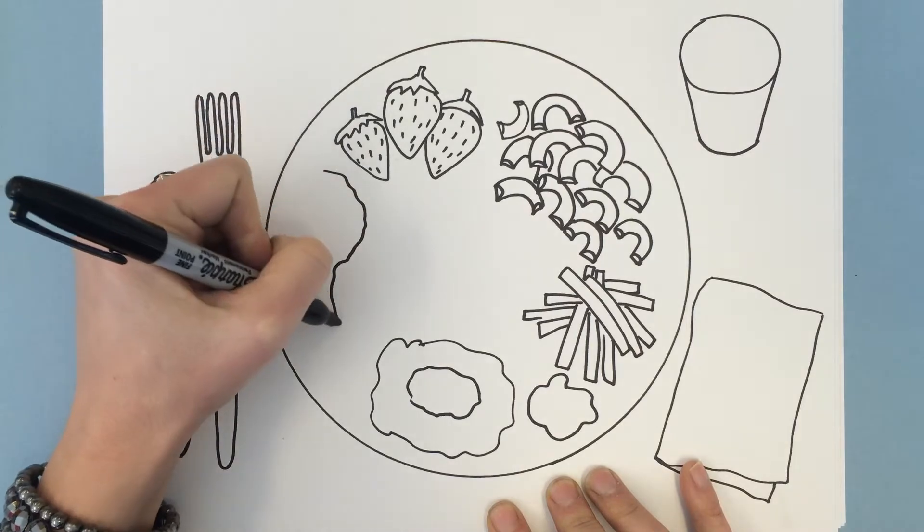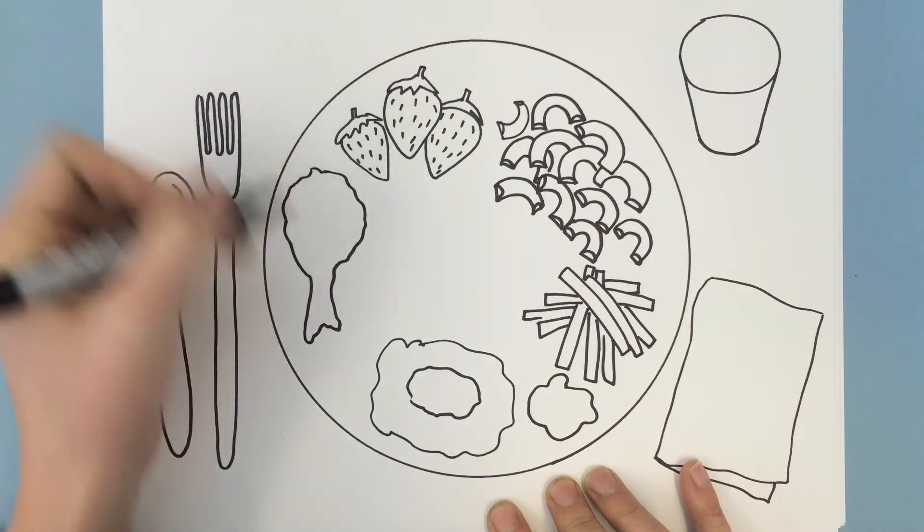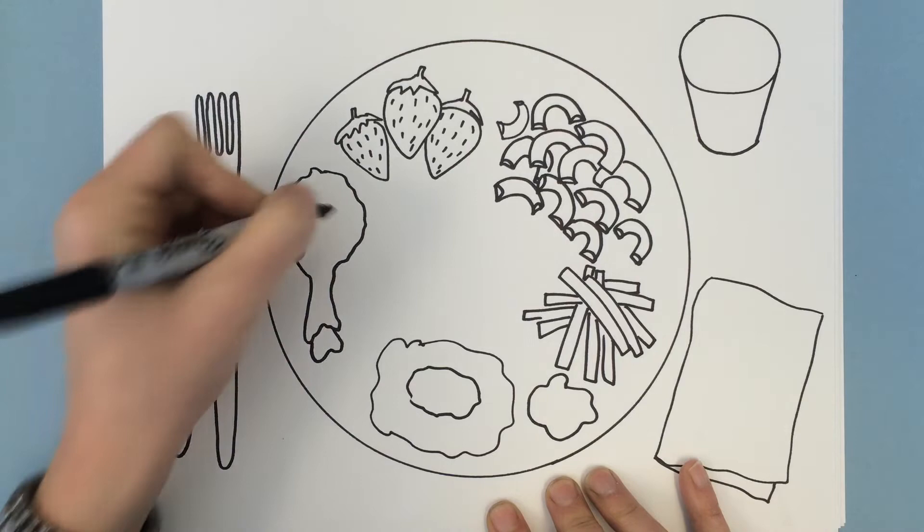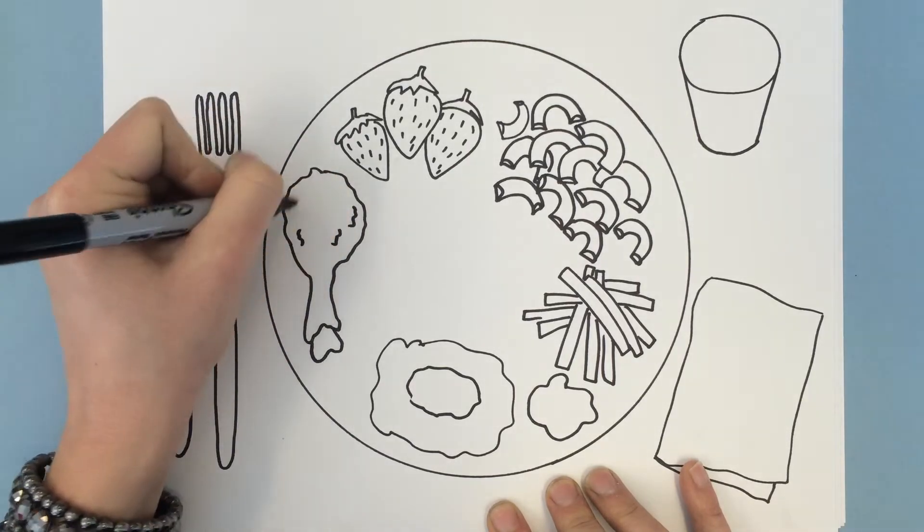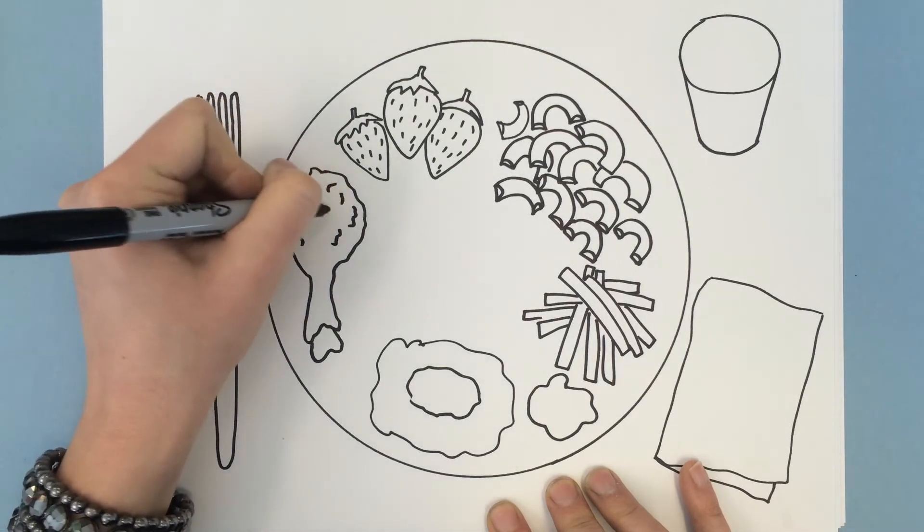And I like some chicken. Some delicious chicken. So here's my fried chicken with the bones sticking out of the end. I'm gonna put a few little wavy lines on here so it looks like the texture of the chicken.